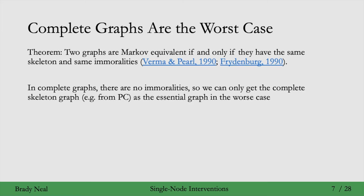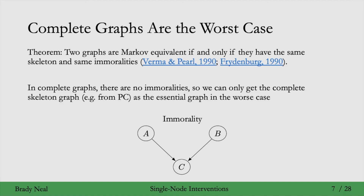This is the worst case graph because there are n choose 2 edges that need to be directed to identify the causal graph, where n is the number of variables. To convince you that there are no immoralities, consider this immorality: it can't be in a complete graph because there's no edge between a and b. A complete graph has an edge between every pair of variables, so you can't have this immorality — that's a proof by contradiction.